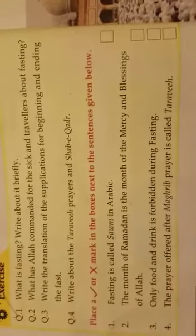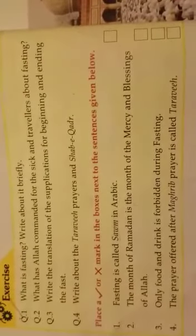We had done the 'place a tick or cross mark in the boxes next to the sentences' exercise. Number one: fasting is called som in Arabic — correct. Number two: the month of fasting is the month of blessings and mercy of Allah the Almighty — correct. Number three: only food and drink is forbidden during fasting — this is wrong, because we also have to avoid doing any wrong or bad action. Number four: the prayer offered after Maghrib prayer is called Taravih — this is also wrong, because the prayer after Isha is called Taravih.